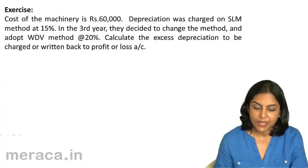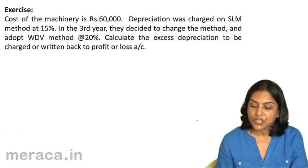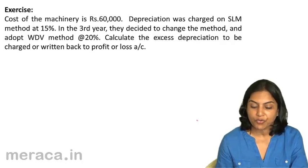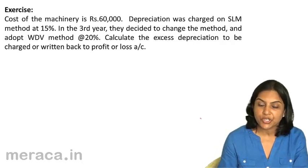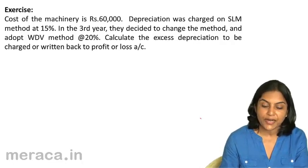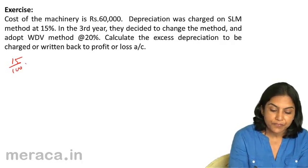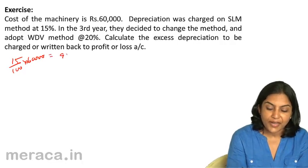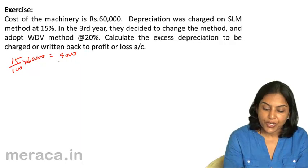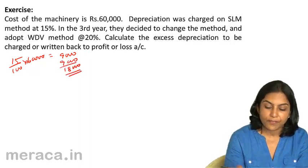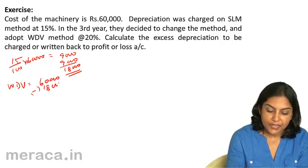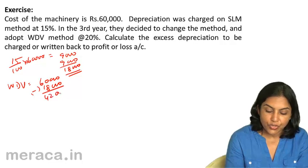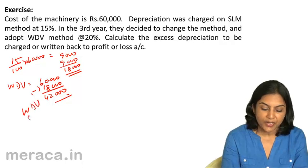Let us consider another example. The cost of machinery is 60,000 and depreciation was charged on straight line method at 15%. In the third year, they decided to change the method and adopt written down value method at 20%. Calculate the excess depreciation to be charged or written back to profit or loss account. Depreciation at 15% of 60,000 is 9,000 each year; after 2 years total depreciation is 18,000, giving a written down value of 42,000 under straight line method.